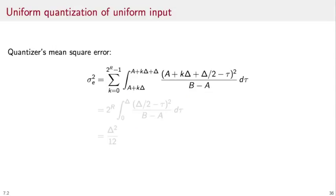Back to the mean square error. We now replace into the expression for the mean square error the values that we found in the previous analysis, namely the boundaries for each quantization interval, the value for the midpoint, and the expression for the probability distribution of the input. And if we compute this integral, we obtain the fundamental result of uniform quantization. The mean square error for a uniform quantizer is equal to delta squared over 12, where delta is b minus a divided by 2 to the r.